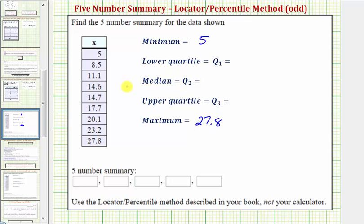Now let's find the median, which would be the data value in the middle. Because we have a total of nine data values or an odd number of data values, the median will be a data value in the list. It would be in the fifth position, because there are four data values less than 14.7 and four data values greater than 14.7. So the median is 14.7.